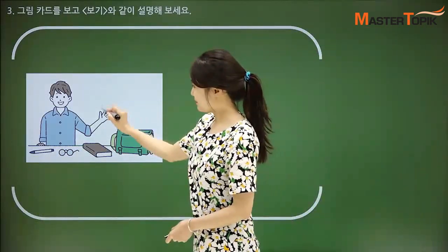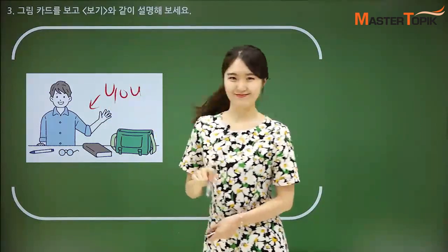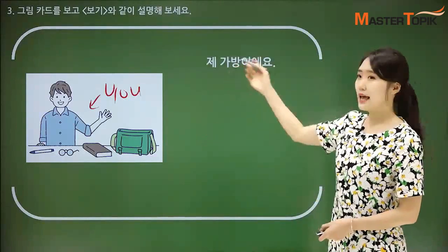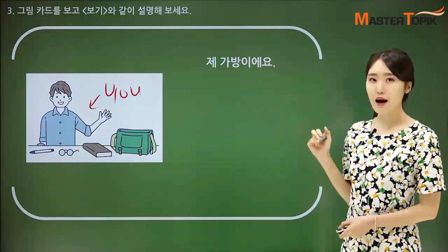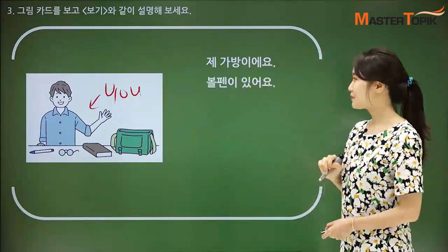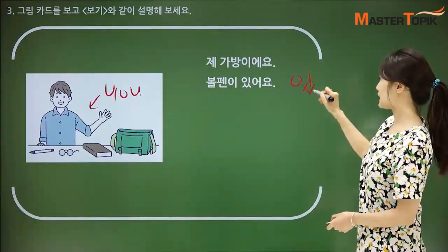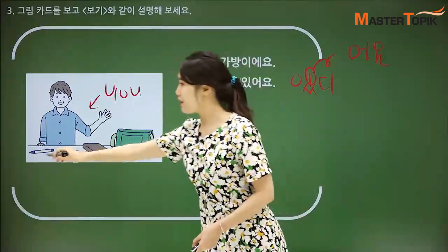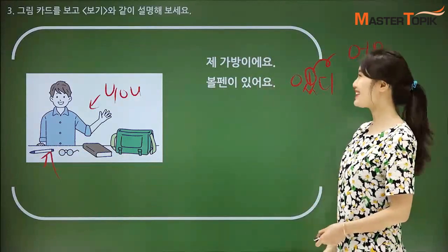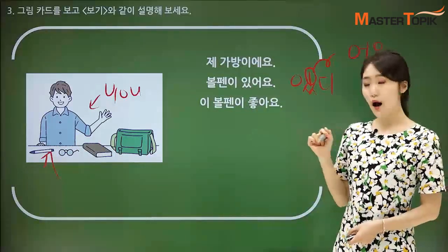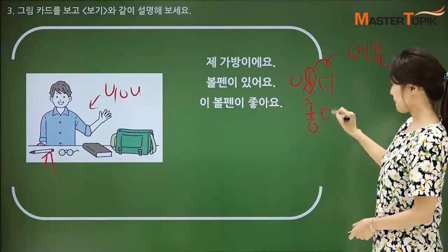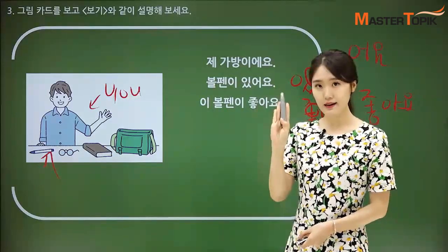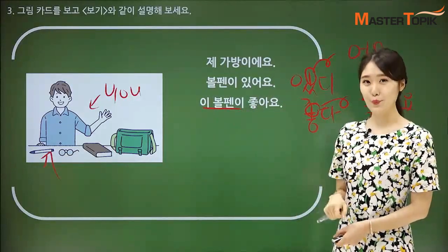Look at this picture. He is introducing what he has in his room and his bag. 제 가방이에요 — 제 means 'mine.' 가방 means 'bag.' 볼펜이 있어요 — 있다, vowel 이, so you use 어요: 있어요. I have a pen. 볼펜이 있어요. 이 볼펜이 좋아요 — 좋다, vowel 오, so 좋아요. This pen is good.